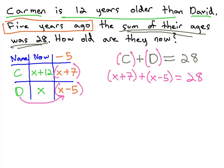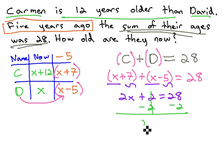We now have an equation we can solve quite nicely by combining like terms, 2x and positive 2 equals 28, subtracting 2 from both sides, 2x equals 26. And finally, dividing both sides by 2 to find out that x is equal to 13.